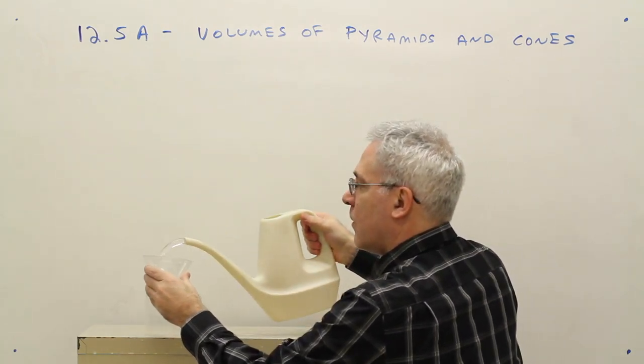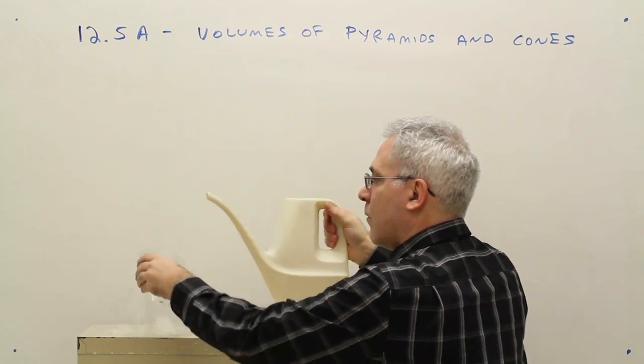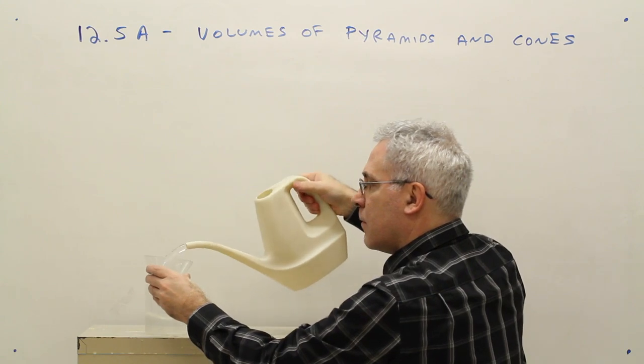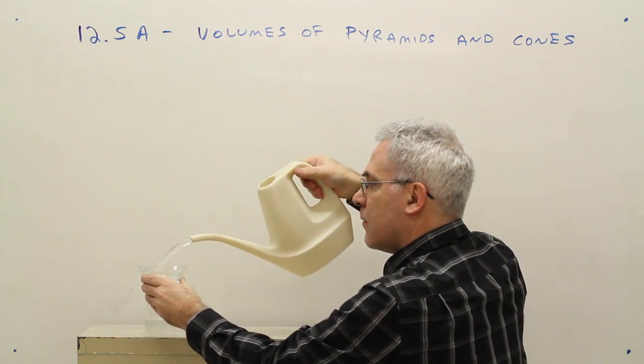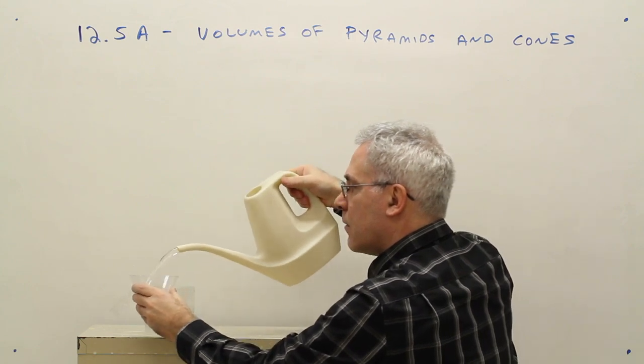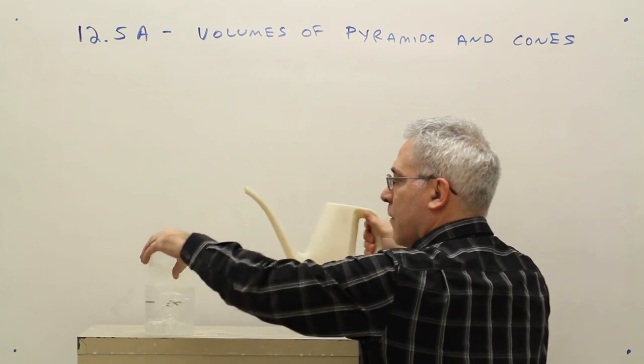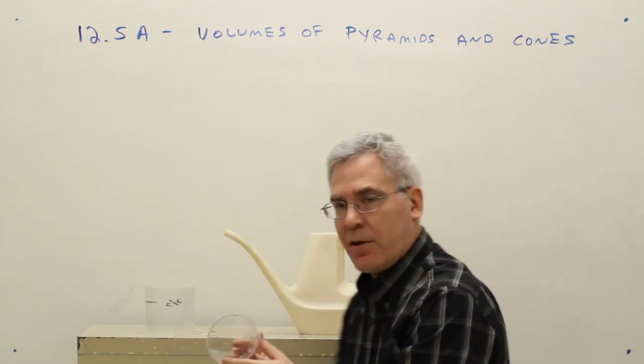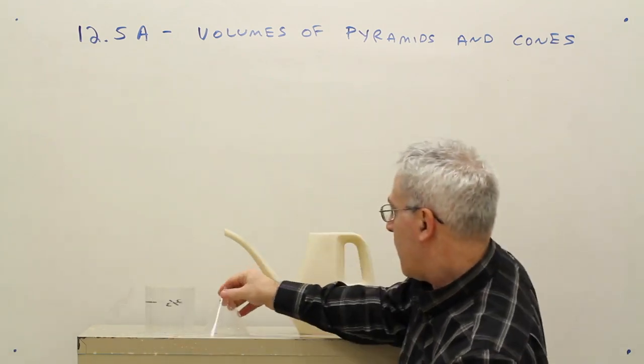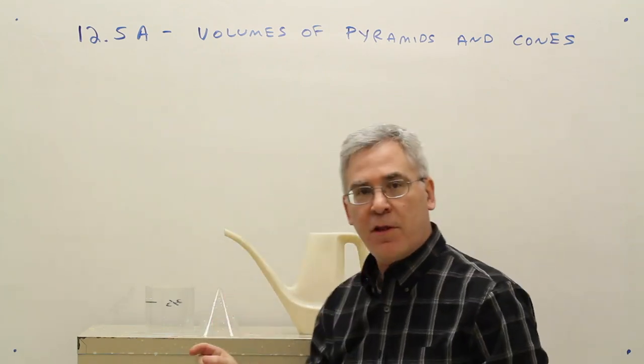One, two, three. That worked out better with less leakage. You can see it took three pourings for the cone to fill up the cylinder.